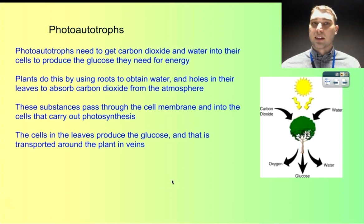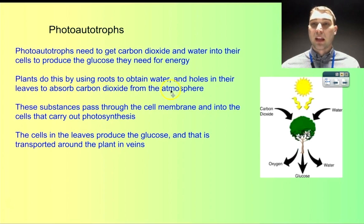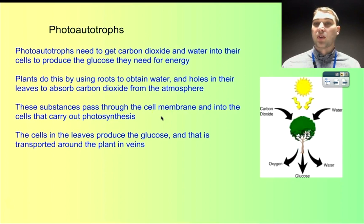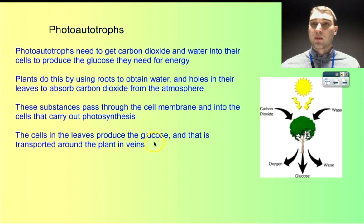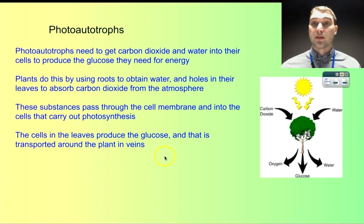Let's talk about photo-autotrophs first, using plants as our example. They need to get carbon dioxide and water into the cells so that photosynthesis can occur. They use their roots to suck water up from the ground, and there are holes in the leaves that suck gases in — including carbon dioxide. These substances pass through cell membranes to get inside cells and then to the chloroplast for photosynthesis. The glucose produced is transported around the whole plant through vessels to other cells, which absorb the glucose and use it for energy.